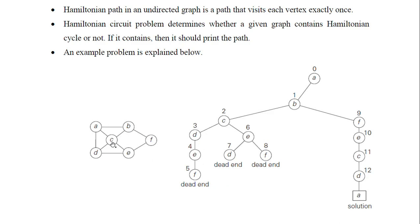I backtrack and try path A→B→F. From F, I can travel to E. From E, I can travel to C. From C, I can travel to D. From D, I can travel back to A. So I have visited all the nodes exactly once and returned to A again. This is the solution.